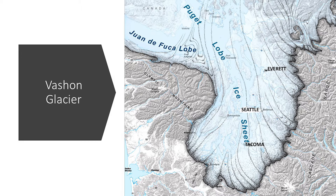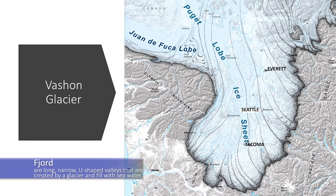In some areas, the ice was 3,000 feet thick. The Vashon Glacier began to melt about 15,000 years ago. Temporary ice dams holding billions of gallons of water from the melting glaciers were formed in eastern Washington. The ice dams became weak and burst, releasing water that flooded and created the channeled scablands in the Grand Coulee. As the ice sheets retreated, it continued to carve a new landscape called a fjord.